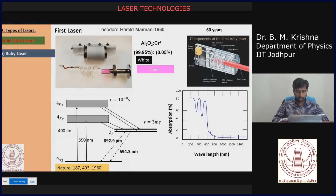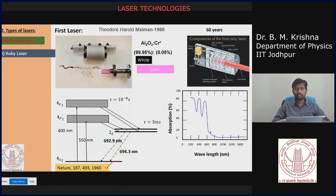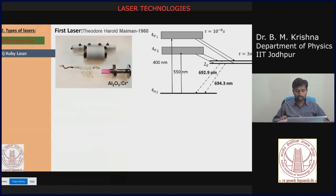This is the first ruby laser, and if you want to go into detail you can refer to the original paper published in 1960 in the journal Nature. Searching on Google will bring up this paper and you can study the full laser system description.